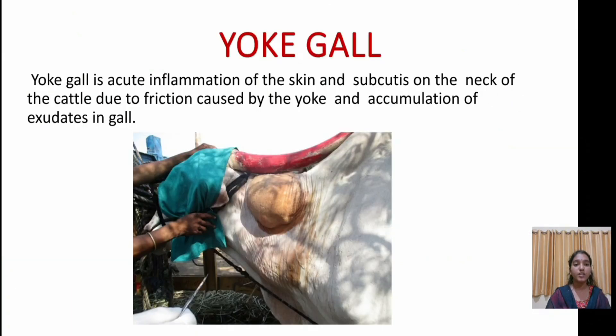Coming to my topic, Yoke Gal. What is Yoke Gal? Yoke Gal is acute inflammation of the skin and the subcutaneous tissue on the neck of cattle, due to friction caused by the yoke and the accumulation of exudates in the gal.